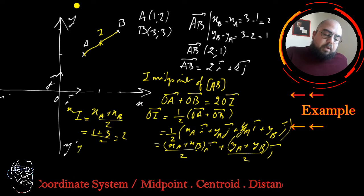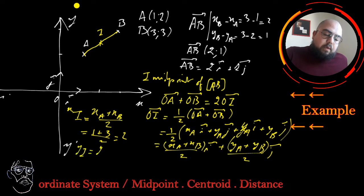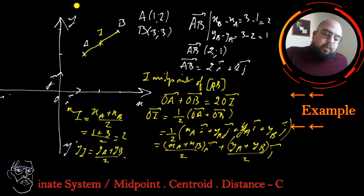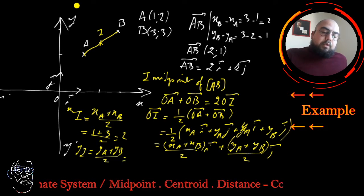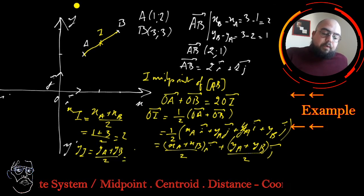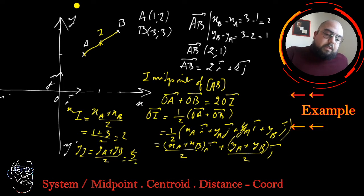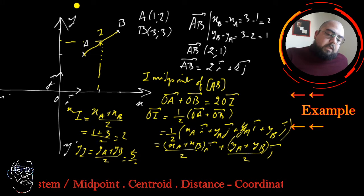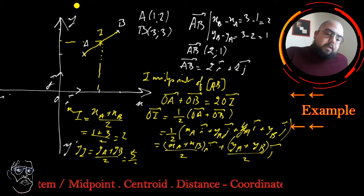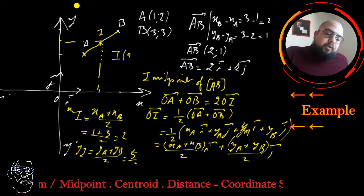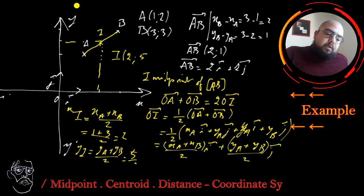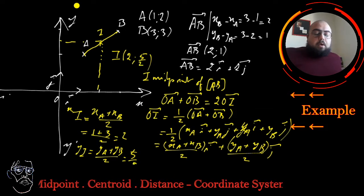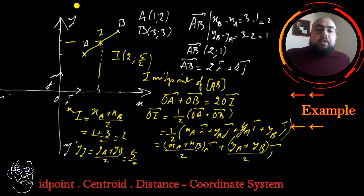Similarly, the y-coordinate of I is (Y of A plus Y of B) over 2, so (2 plus 3) over 2, which is 5 over 2. So the coordinates of the midpoint I are (2, 5/2). That was related to the midpoint.